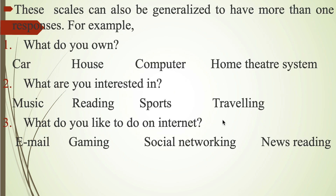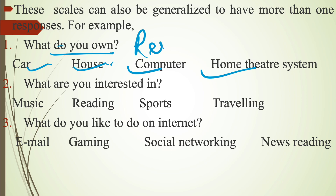What is multiple category scale? In this case, the respondent can select more than one answer from the questions. For example: What do you own? — car, house, computer, home theater system. The respondent can select one or more options, two or more options from the given responses.